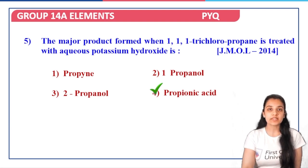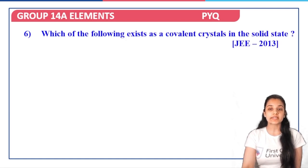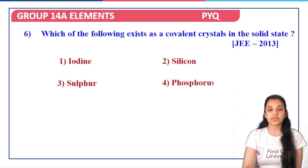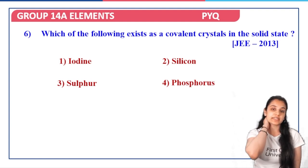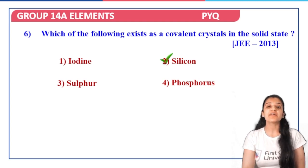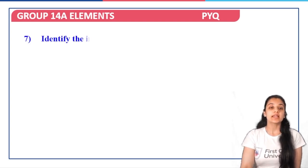Next question: which of the following exists as covalent crystals in solid state — iodine, silicon, sulfur, or phosphorus? This was asked in JEE 2013. In the solid state, silicon exists as covalent crystals, which we have already seen. Silicon is the correct answer.